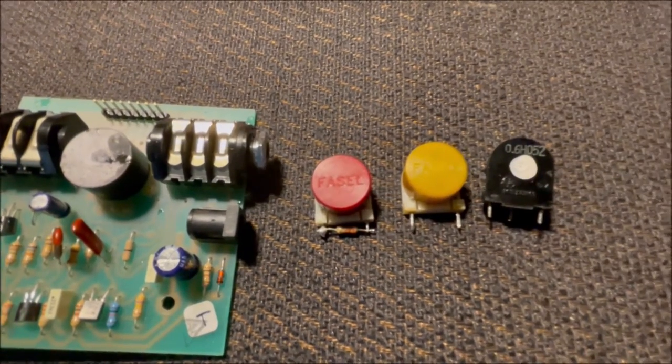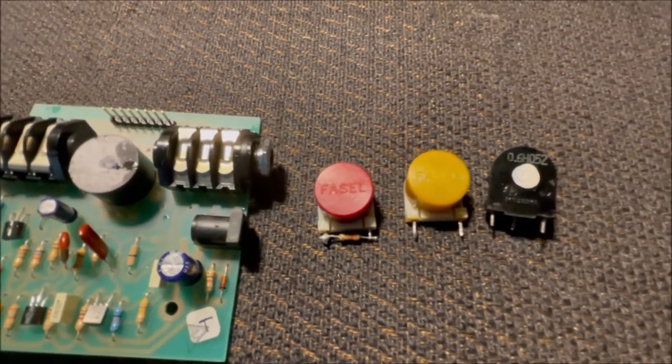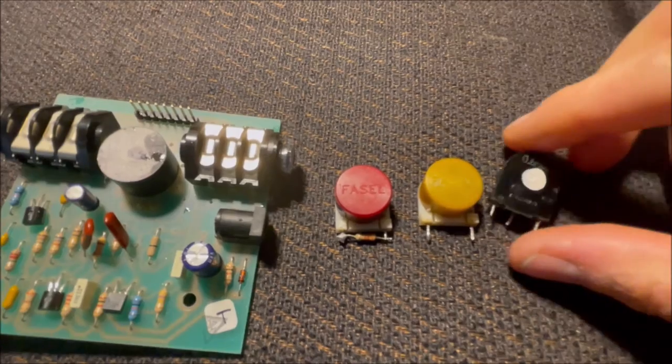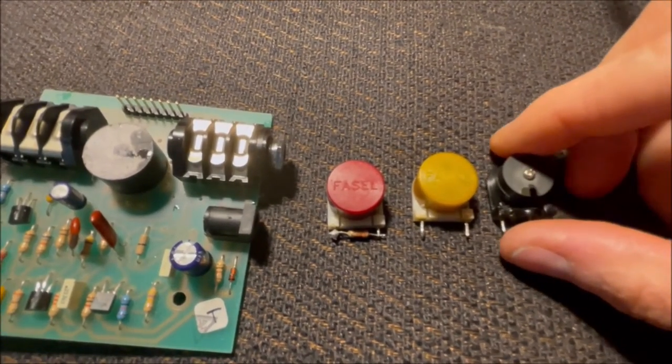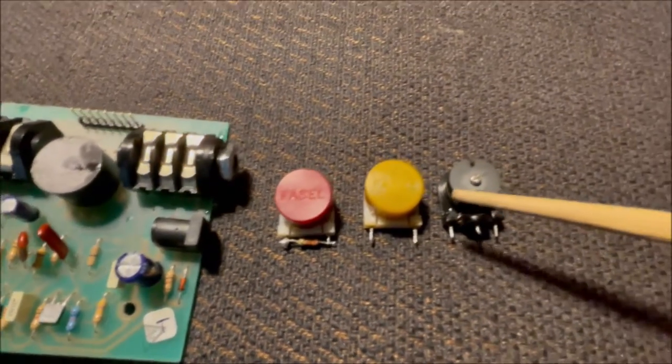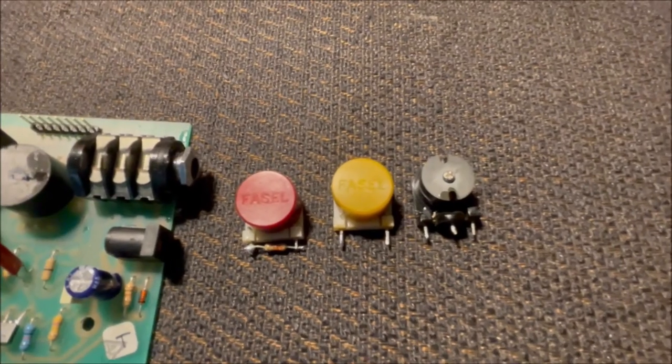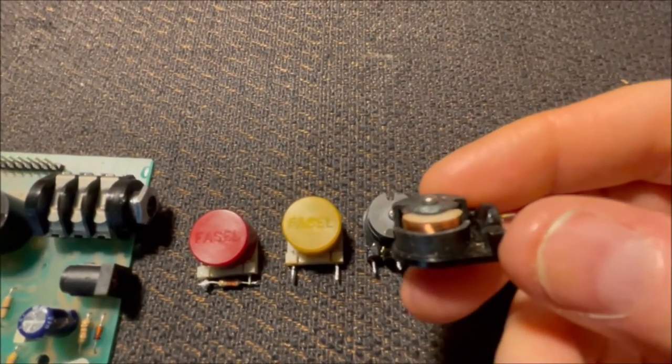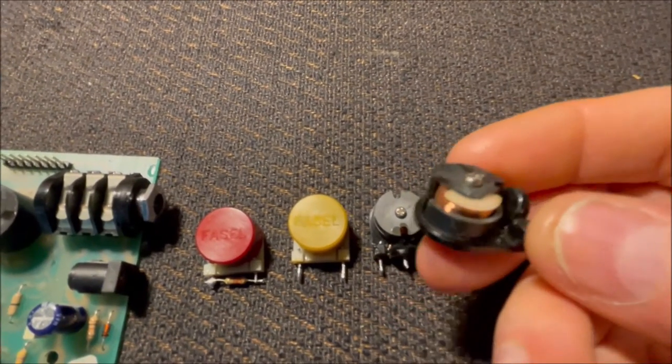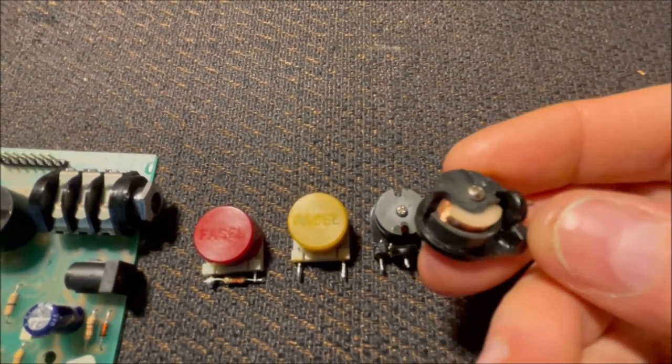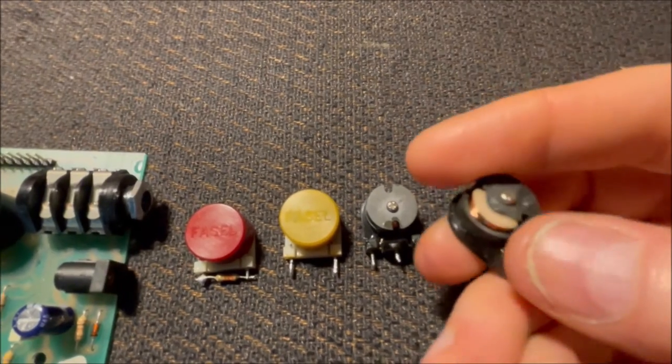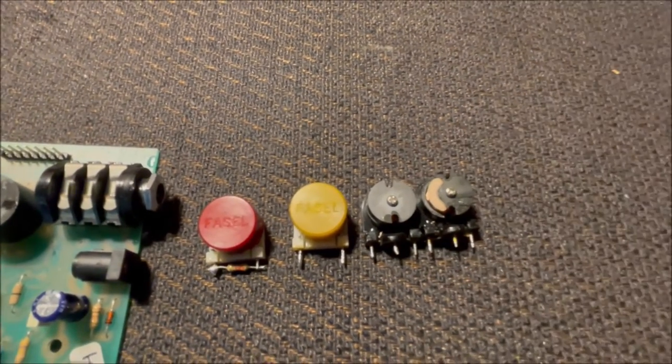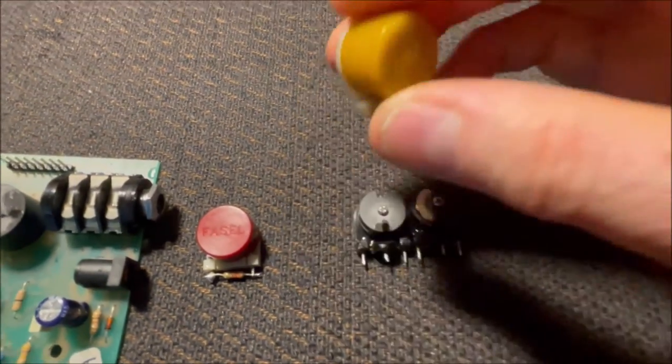It measures 600 millihenries, which is essentially what this red phasel measures. The construction of these - these are all the same thing - these are all cup and core type of inductors, which means there's a little ferrite cup that surrounds a coil of wire on the inside. In the case of the phasel, they just stick a little cover on the outside to make it look prettier.